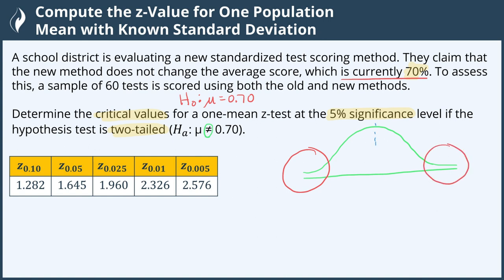Right down the center will be where μ equals 0.7. We were also told that the significance level, or alpha, equals five percent.